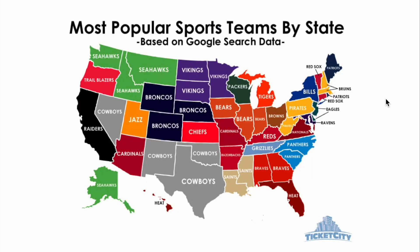The next map is most popular sports team by state. This is just a fun map with no scientific research behind it, and you might not agree — there's one on here I don't agree with myself. It's interesting how things are localized: the Cowboys around Texas, the Seahawks, the Vikings — all the teams kind of stay near their area.